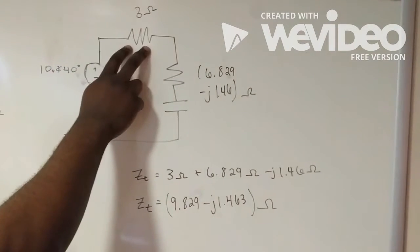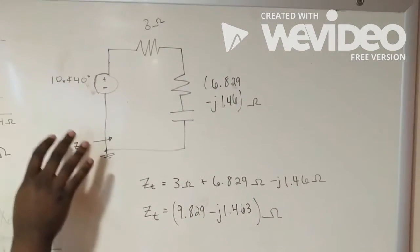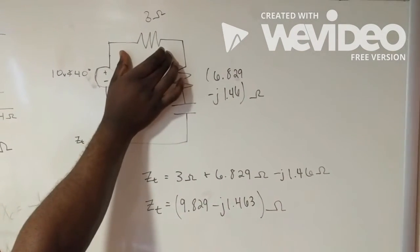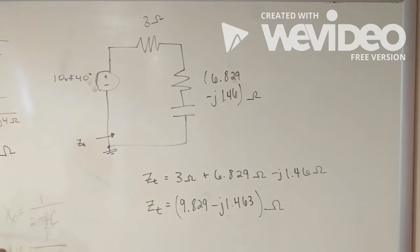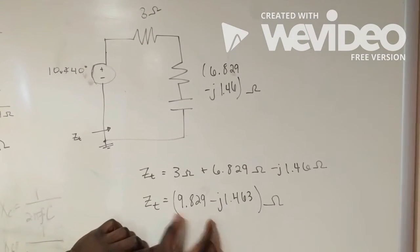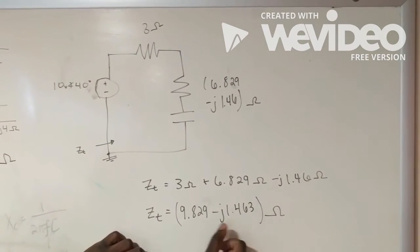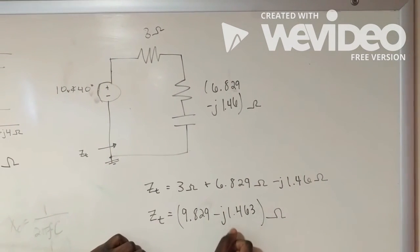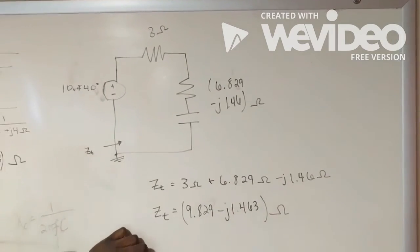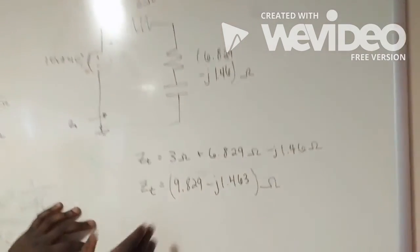Now, remembering that we had the 3 ohm resistor back in the original circuit, we're going to add that to what we got in parallel. Giving us, in the end, 9.829 minus J 1.463 ohms. And that is it completely for ZT.